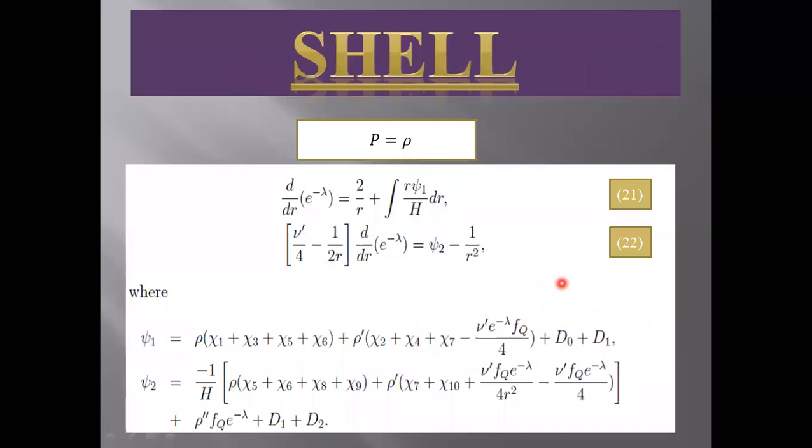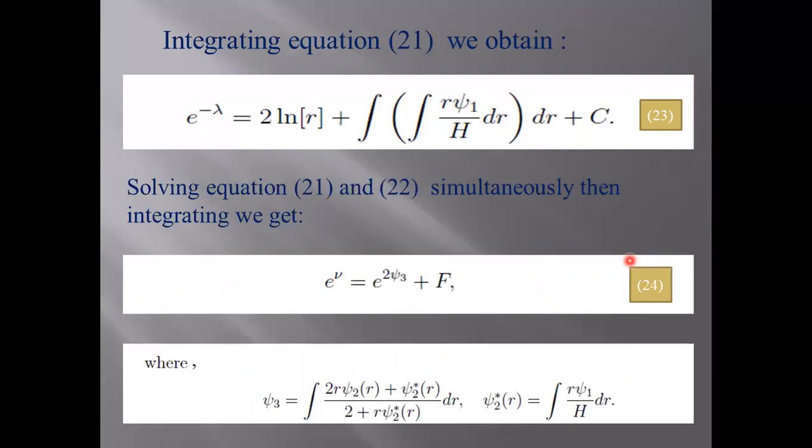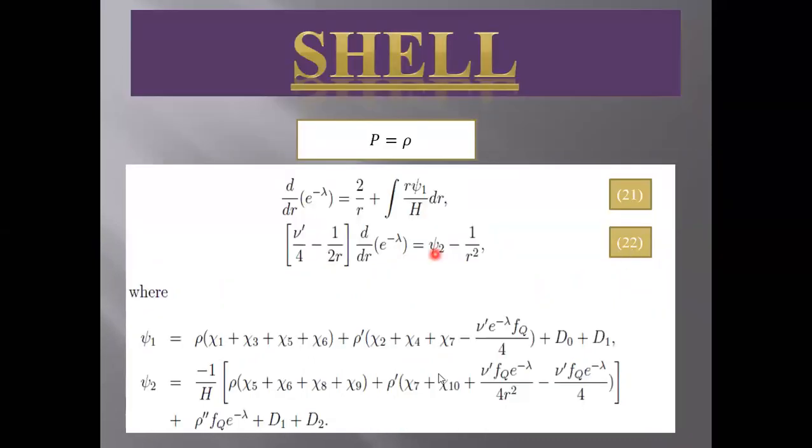Next, the shell. Our shell consists of matter. One can note that it is very difficult to obtain the non-vacuum solution for the shell region. So, the equation of state used here is this, but under some approximation and simultaneously using the field equations, we have obtained equations 21 and 22. The values for ψ₁ and ψ₂ are given below.